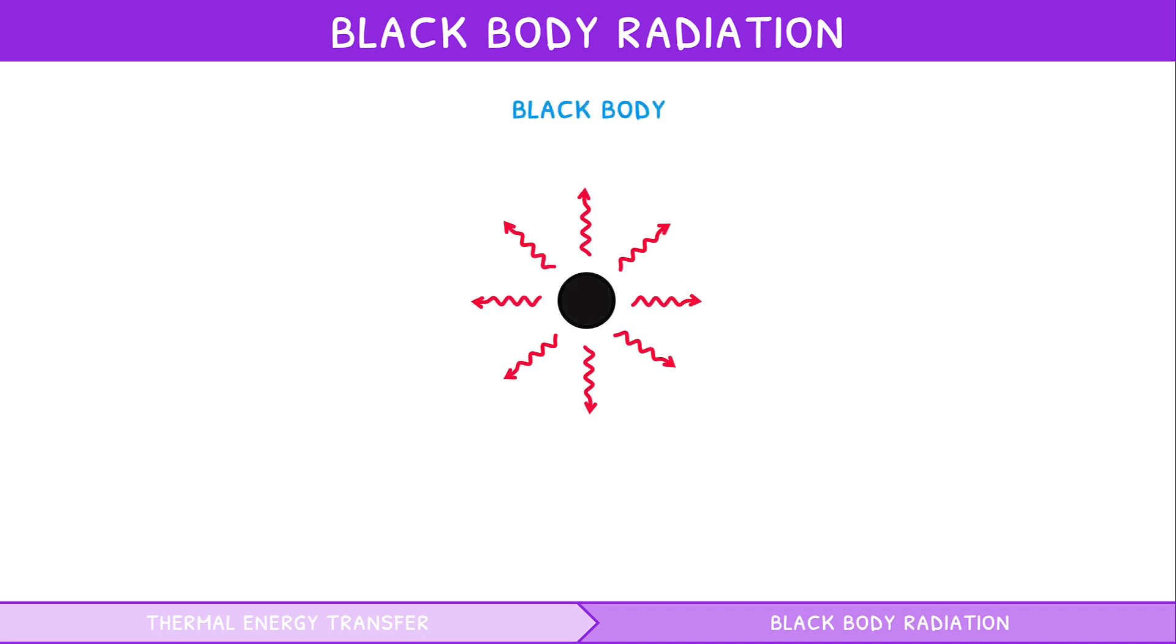A black body is a perfect absorber and emitter of thermal radiation. The radiation it gives off is termed black body radiation. Because the material and surface is considered perfect, it exists to explore other factors that influence radiation.